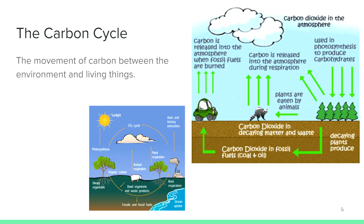The carbon cycle describes the movement of carbon between the environment and living things. Plants use carbon dioxide during photosynthesis and give off carbon dioxide during cellular respiration. Animals release carbon dioxide when they breathe, and when animals eat plants, their waste contains carbon dioxide. When plants and animals die, the decomposing matter releases carbon dioxide. When the remains are old enough, they become fossil fuels, which humans burn through combustion for machines and factories.